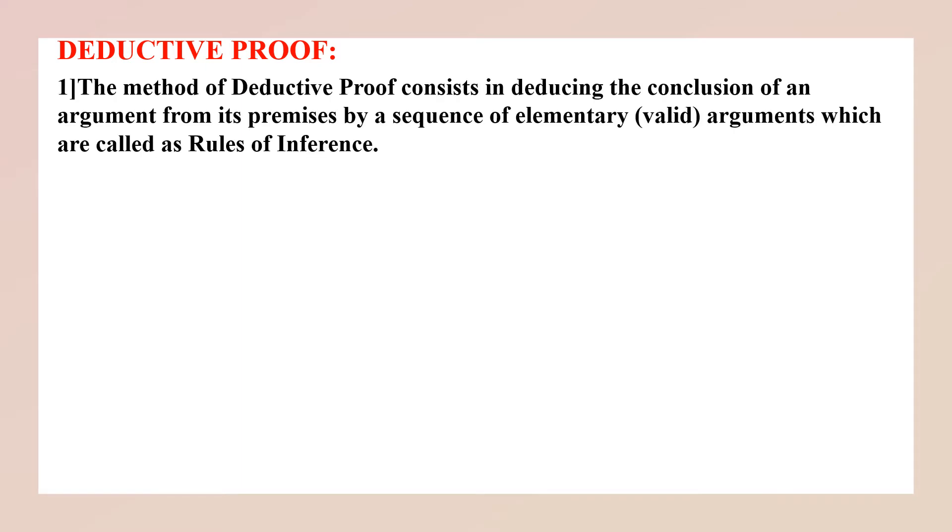What do you understand by deductive proof? The method of deductive proof consists in deducing the conclusion of an argument from its premises by a sequence of elementary valid arguments which are called rules of inference. They are proofs in which we deduce the conclusion with the help of some rules. They are called the rules of inference.